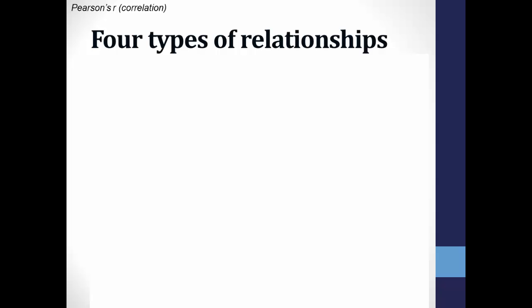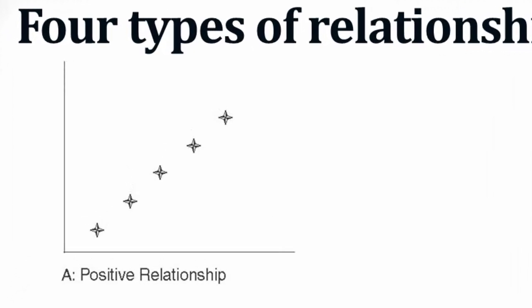If you plotted out the data, there are four types of relationships that could exist. The first is the one you would probably expect for this example: a positive relationship.